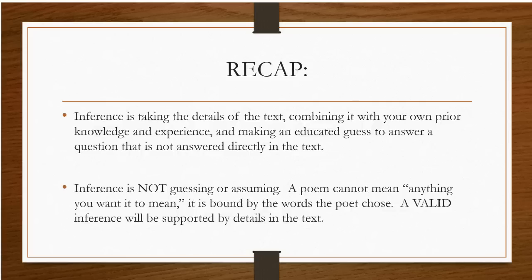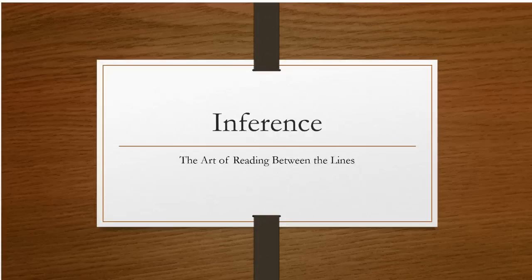Let's have a little recap. Inference is taking the details of the text, combining it with your own prior knowledge and experience, and making an educated guess to answer a question that is not answered directly in the text. Inference is not guessing or assuming. A poem cannot mean anything you want it to mean — it is bound by the words the poet chose, and the same is true of a novel or a textbook. A valid inference will be supported by details in the text. Go back through this, make some notes, do the practices again, and put your active reading into play. Remember that inference is something you'll have a quiz on — you'll be asked to make inferences on small passages like the ones in this lesson, so make sure you've done the practices before you take the quizzes.